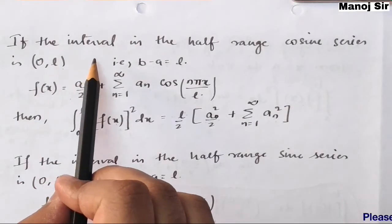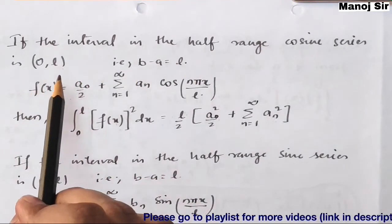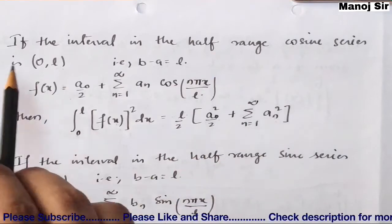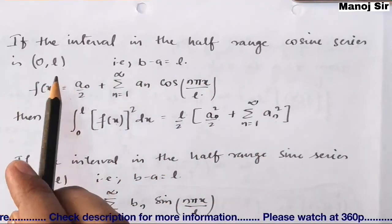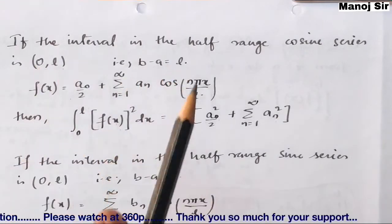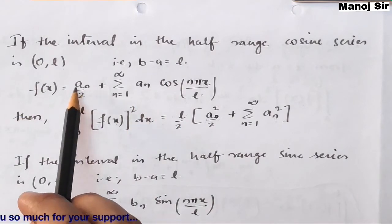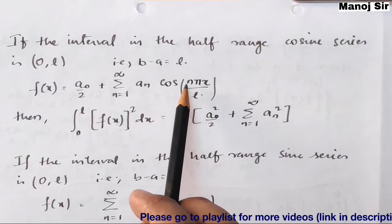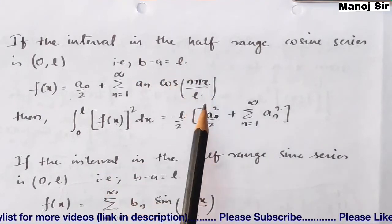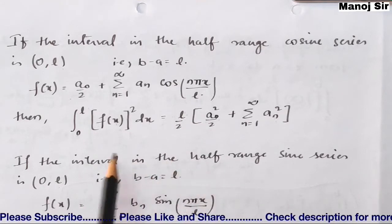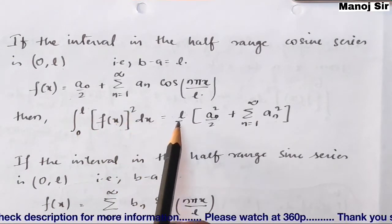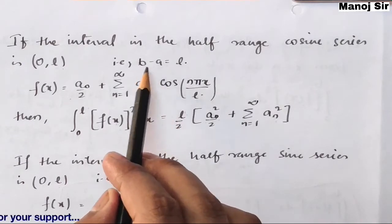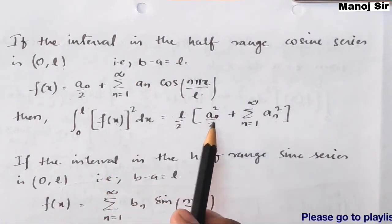For the half-range cosine series in the interval (0, l): b−a = l. The series is f(x) = a₀/2 + summation from n=1 to infinity of aₙ·cos(nπx/l). Parseval's identity becomes: integral from 0 to l of [f(x)]² dx = (l/2) × [a₀²/2 + summation from n=1 to infinity of aₙ²].